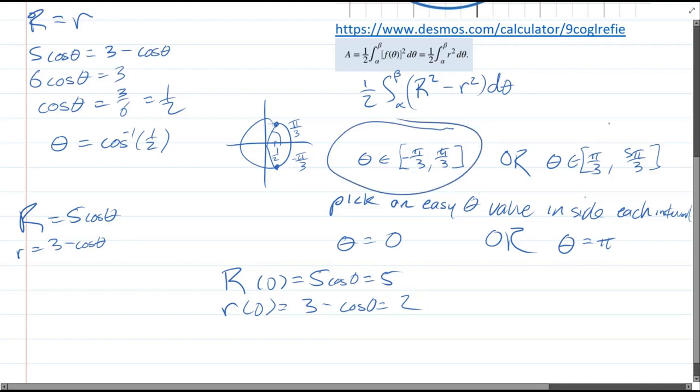Let's do the same for the second. Big R of pi is 5 cos pi, which is negative 5. Little r of pi is 3 minus cos pi, which is 3 minus negative 1, or 4. Now the big value is smaller than the small value.